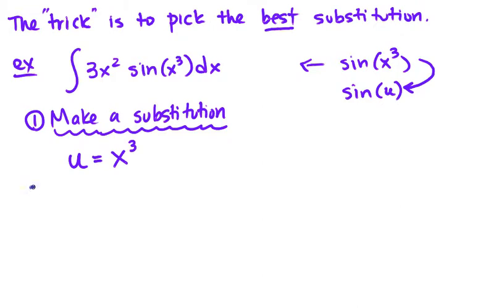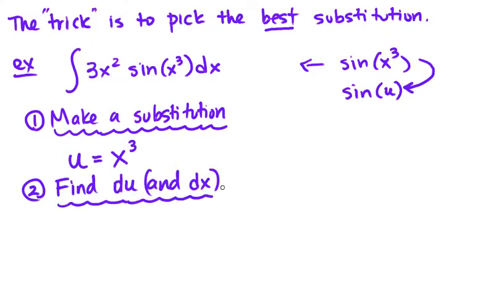Then I go to step 2. Step 2 is to change the differentials, which is essentially to take the derivative. If you take the derivative of u, you get du. And if you take the derivative of x³, you get 3x² times the differential of x. Now I've found du. I can always rearrange this. If I wanted to find dx, it would be du divided by 3x².